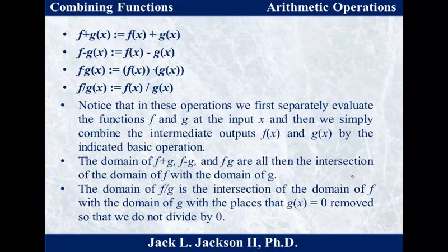For f divided by g, we also start with the domain of f intersected with the domain of g. But we have to worry about one additional thing: whereas we can add, subtract, and multiply pretty much anything, we can't divide by zero. So we must remove from that domain the places that make g of x equal to zero, to ensure we never divide by zero.